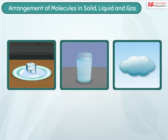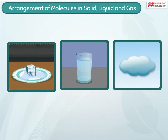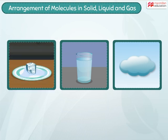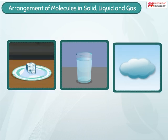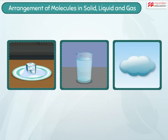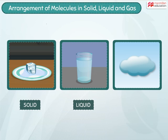To understand the three states of matter, let us take the example of the different states in which water exists: ice, water, and water vapor. Ice is a solid, water is a liquid, while water vapor is a gas.